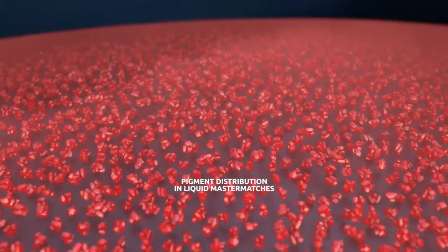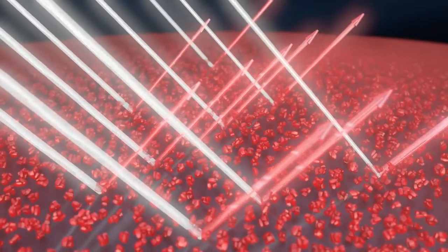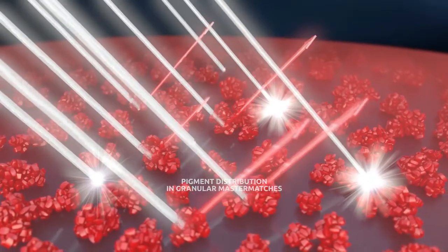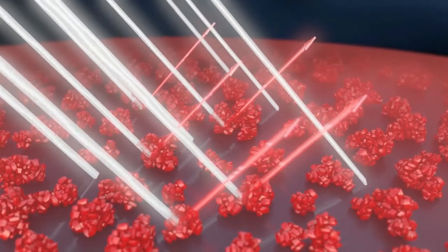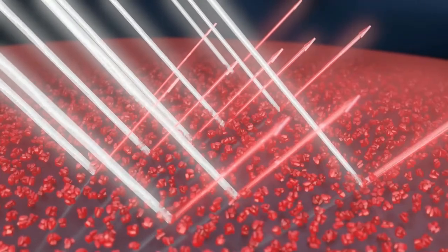This means that more particles can reflect light, resulting in the same color intensity like granular master batches, while using less master batches. That way, liquid master batches make a sustainable contribution to saving raw materials.